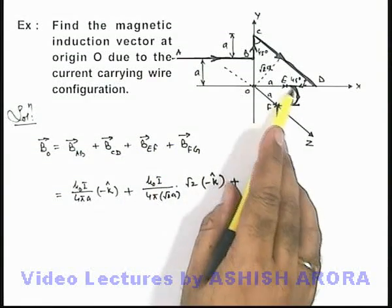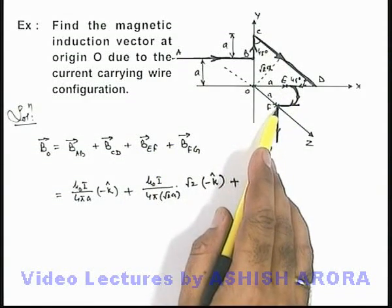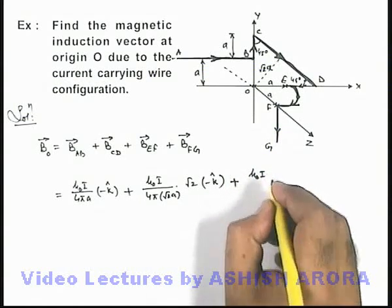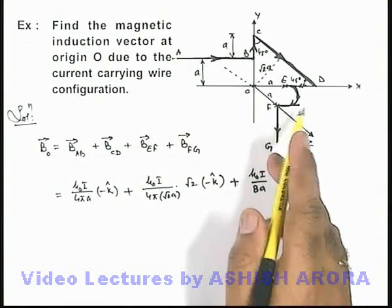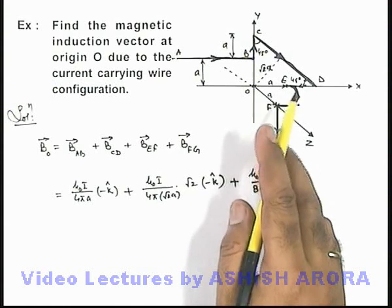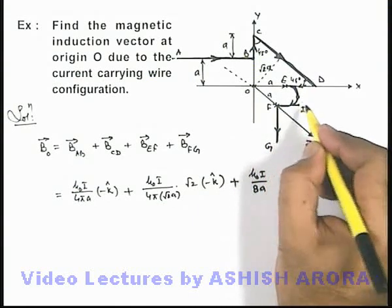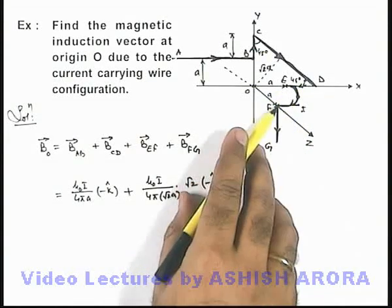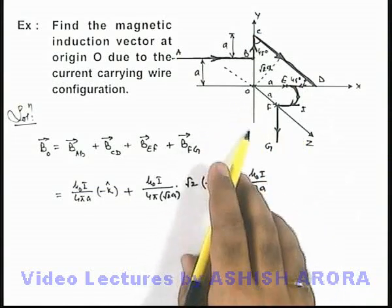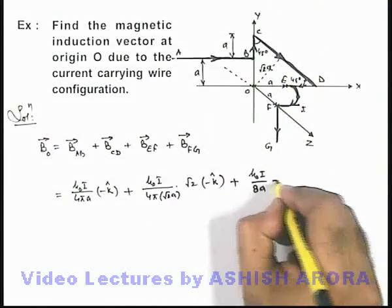For the quarter circular arc E-F, the magnetic induction is μ₀i/8a, since it is one-fourth of that of a full circular coil carrying current i. The segment E-F lies in the x-z plane, so its magnetic induction must be along the y-direction. By the right-hand thumb rule, it is along the minus-ĵ direction.